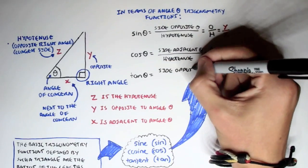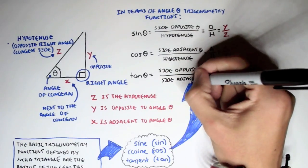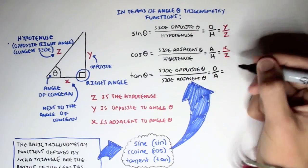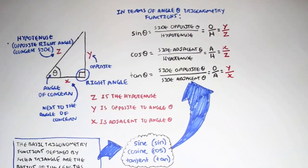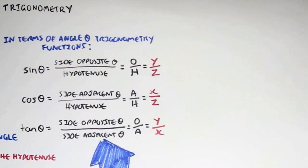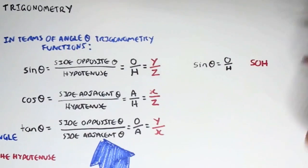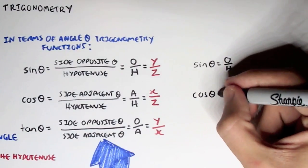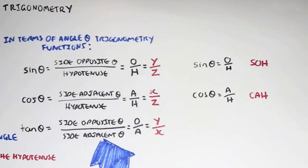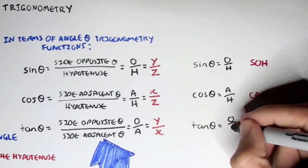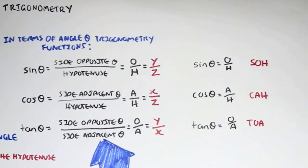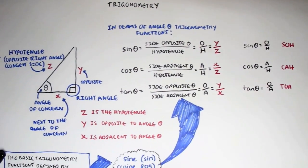Lastly, tan of the angle is equal to the side opposite the angle divided by the side adjacent to the angle — O divided by A, opposite over adjacent — which equals Y over X. To simplify, we can assign abbreviations: sine angle equals O over H, abbreviated SOH; cosine equals A over H, abbreviated CAH; and tan equals O over A, abbreviated TOA. We can remember this as SOH-CAH-TOA.